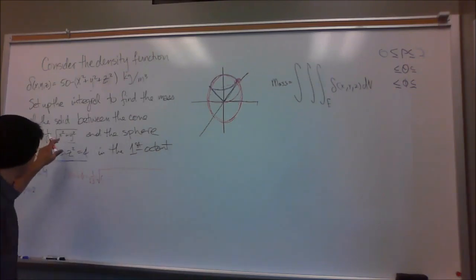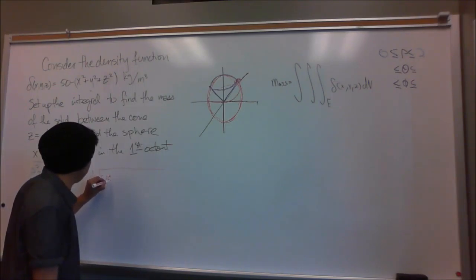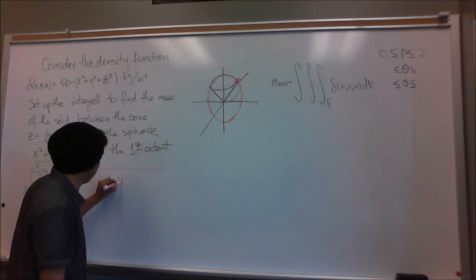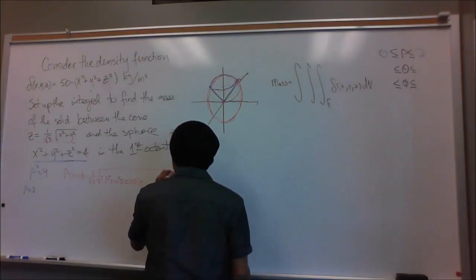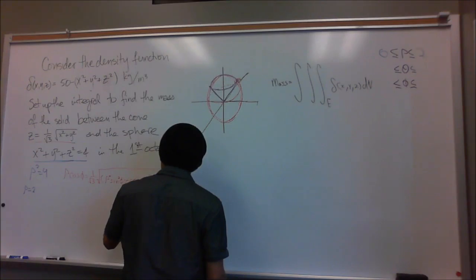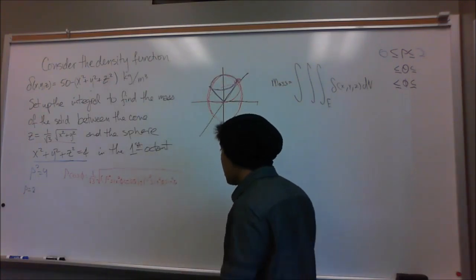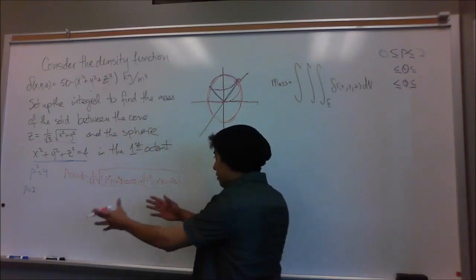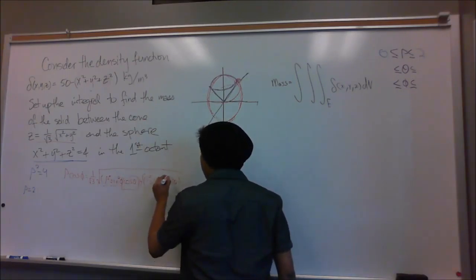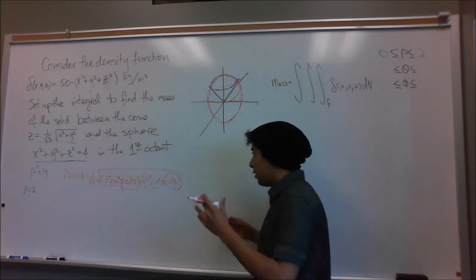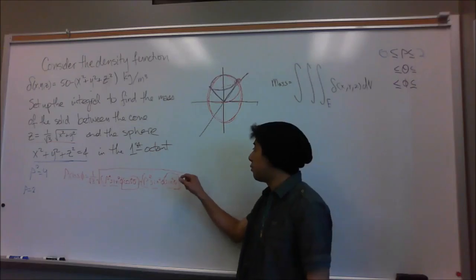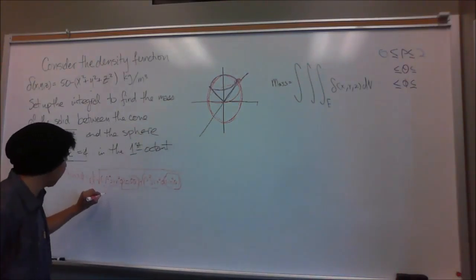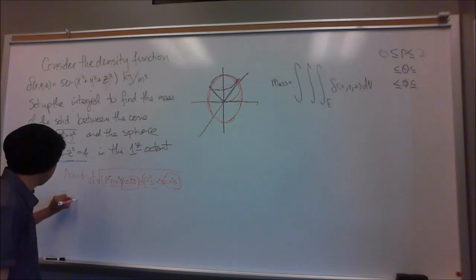The expression under the square root is x squared plus y squared, which we convert to rho squared sine squared phi cosine squared theta plus rho squared sine squared phi sine squared theta. They all have rho and sine phi in common, so we factor that out, and cosine squared theta plus sine squared theta is just 1. The square root cancels, leaving cosine phi equals 1 over the square root of 3 times rho sine phi.